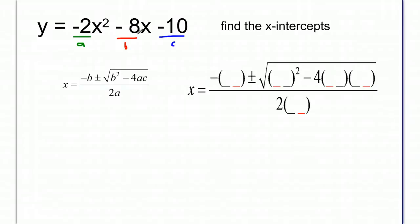So negative 8, because negative 8 is b, plus or minus the square root of b squared, so negative 8 squared, minus 4 times negative 2 times negative 10, so times positive 20 in effect.